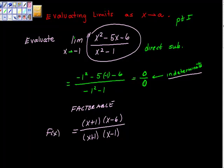And this is f of x. So this thing factors out. This x plus 1 factors out. Now look what happens. Now if we go back and we look at f of negative 1 again, look what happens now. We would get negative 7 over negative 2.